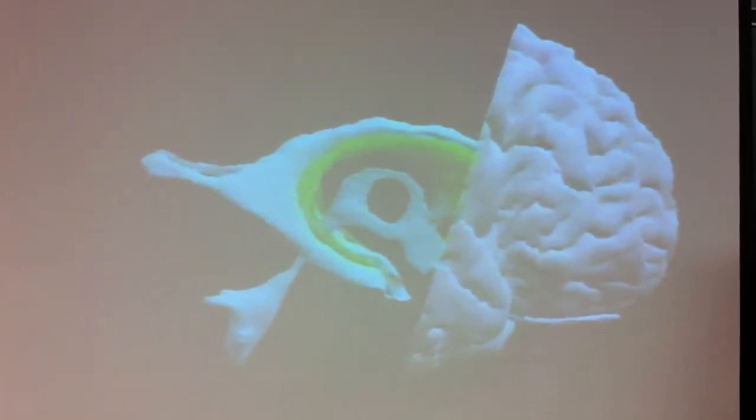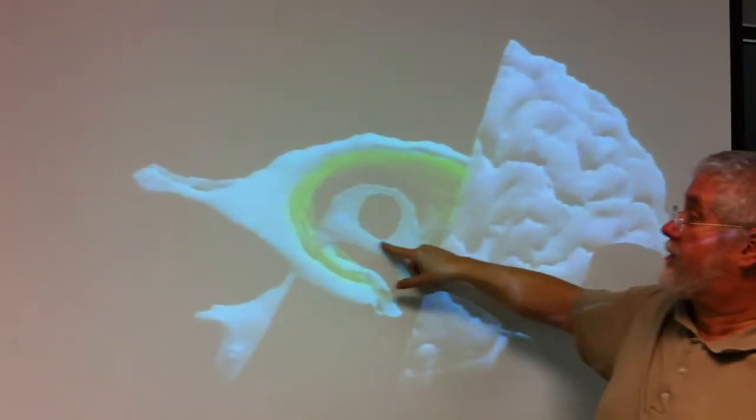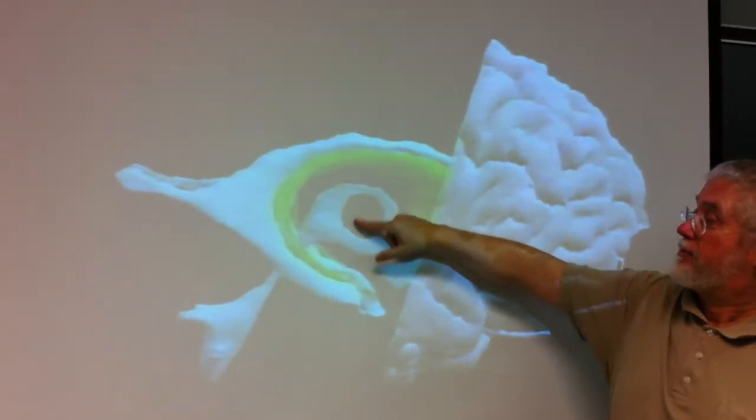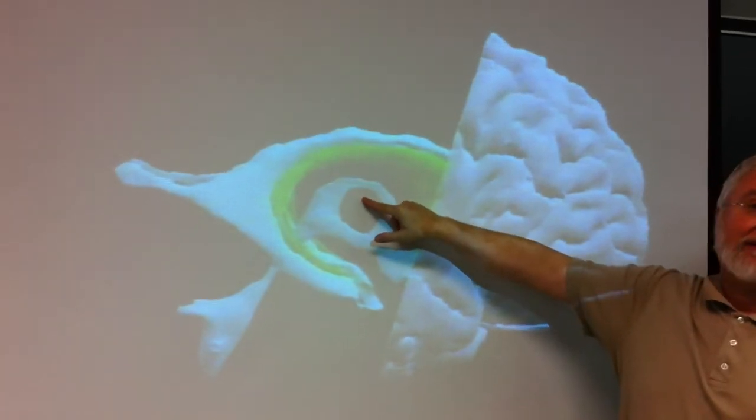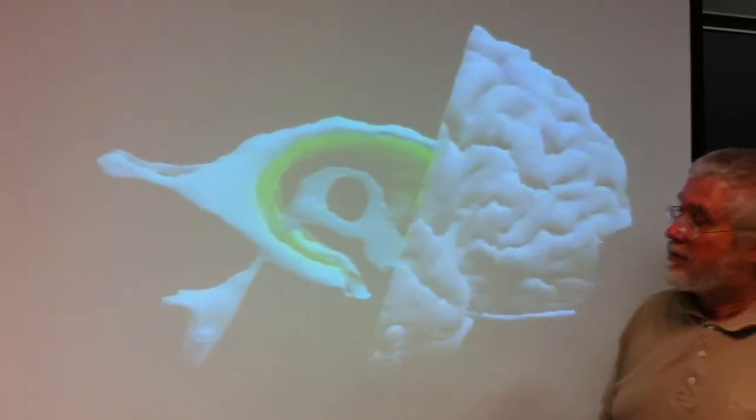In the middle here, you can see this ventricle, what is this one? Third ventricle. What would be in here? Massa intermedia. Massa intermedia.